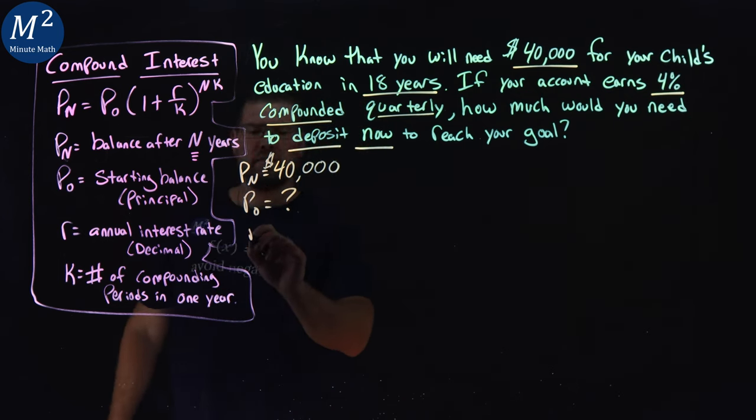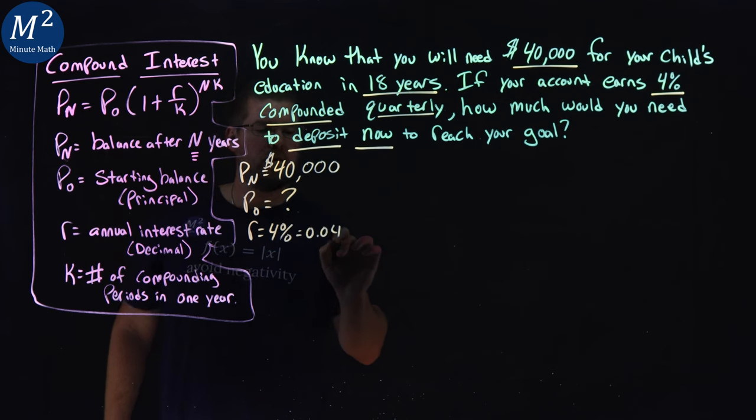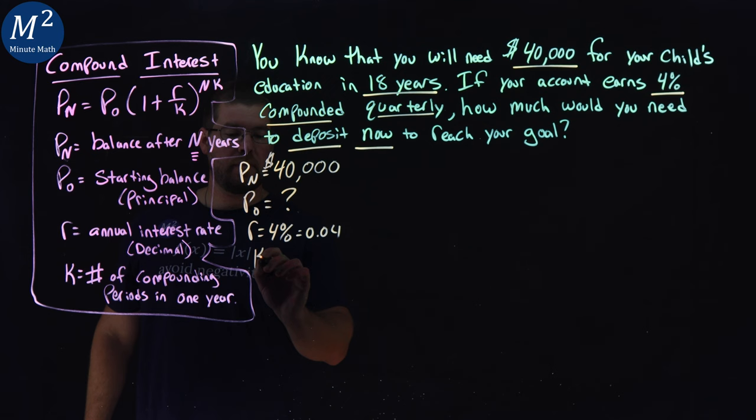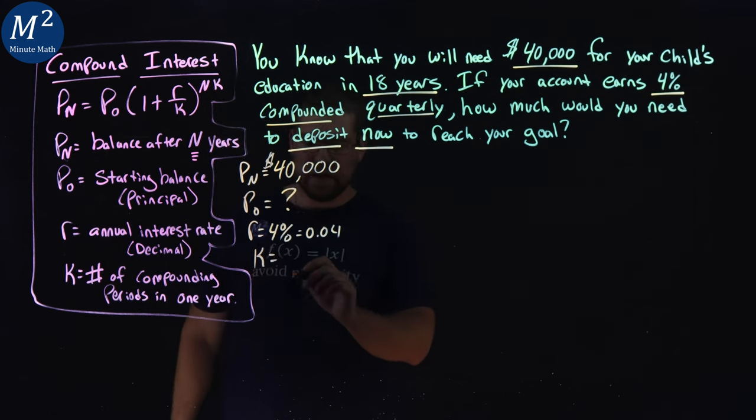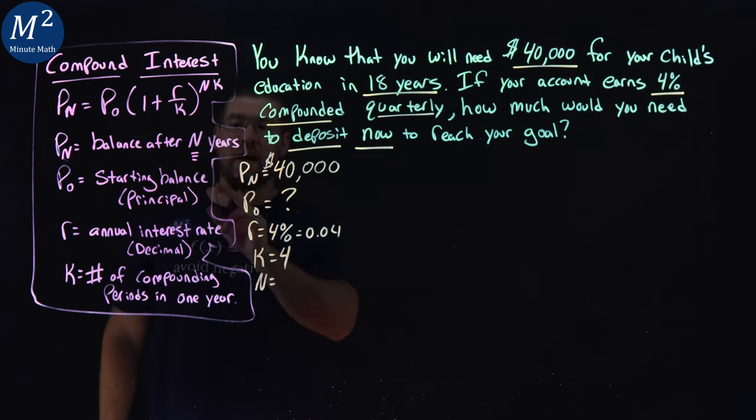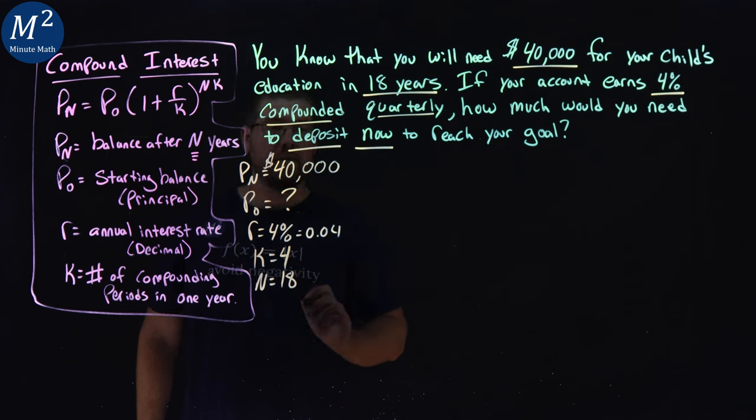Our rate here is 4%. And as a decimal, 0.04. Not too bad. We've got compounding periods, K. They tell us compounding quarterly, 4 quarters in a year. That's a 4. And here is how many years our end value we're looking for. Well, they said it's in 18 years.